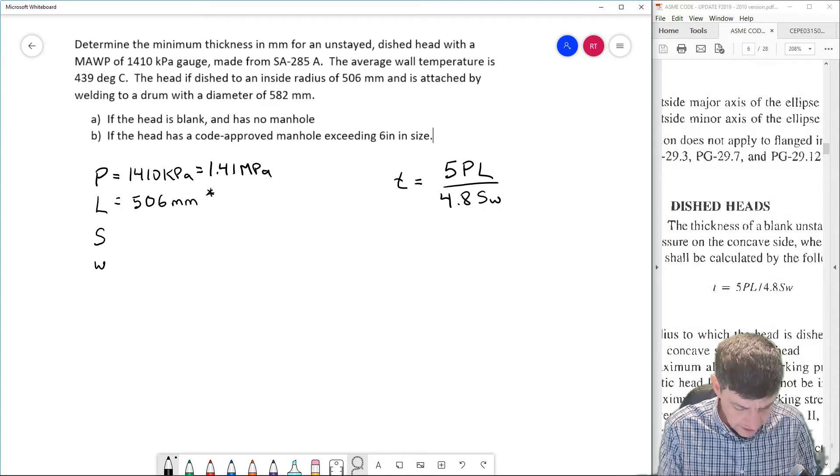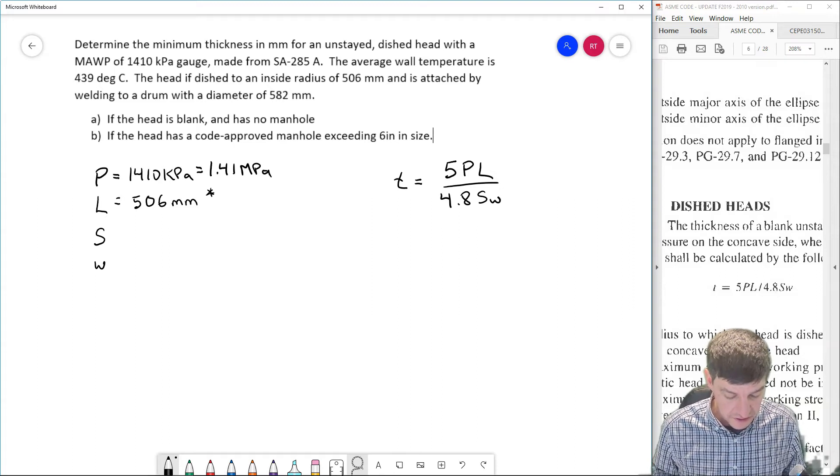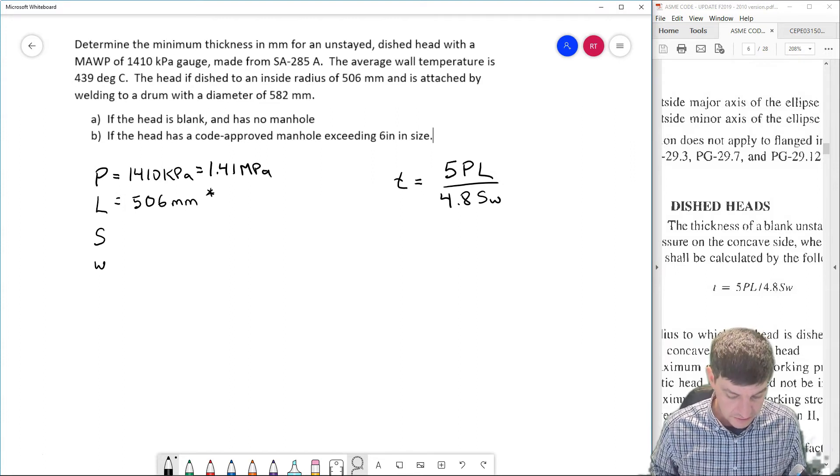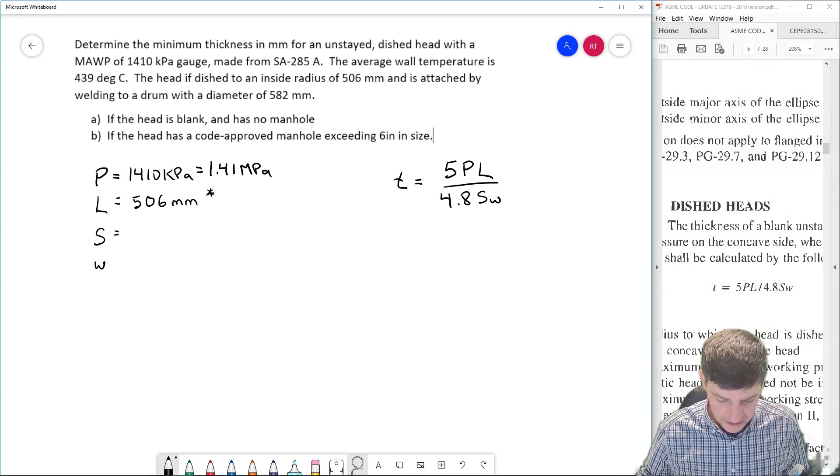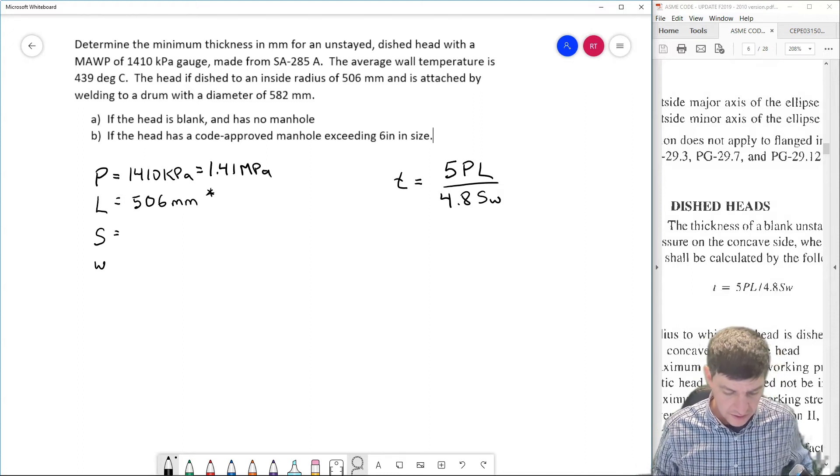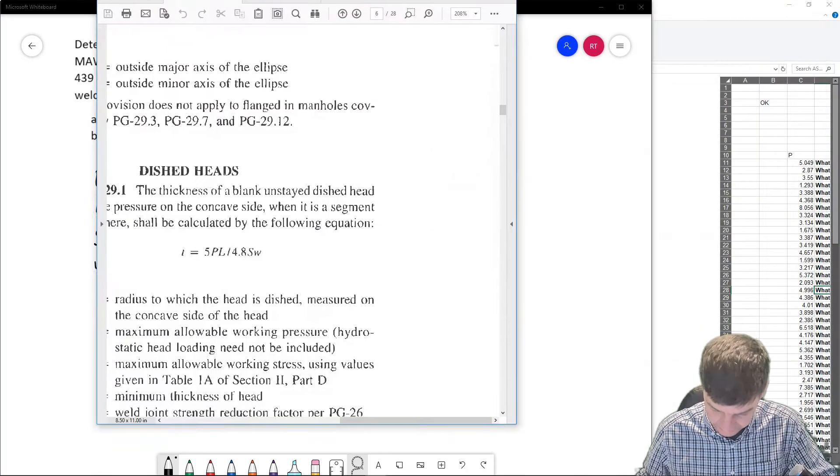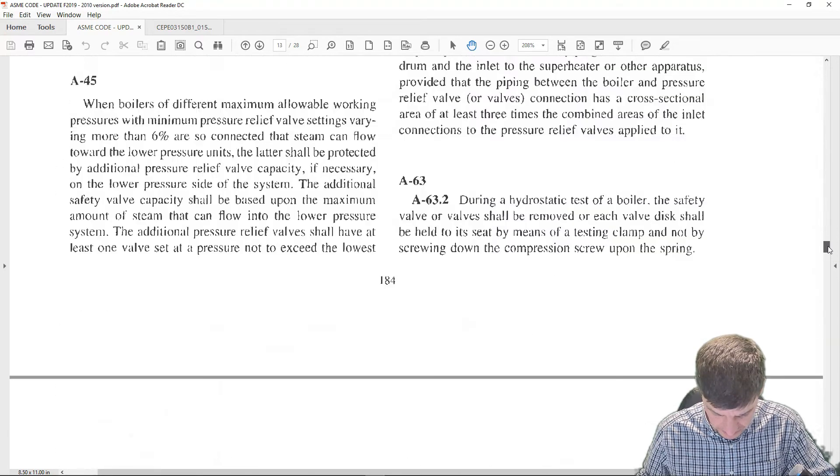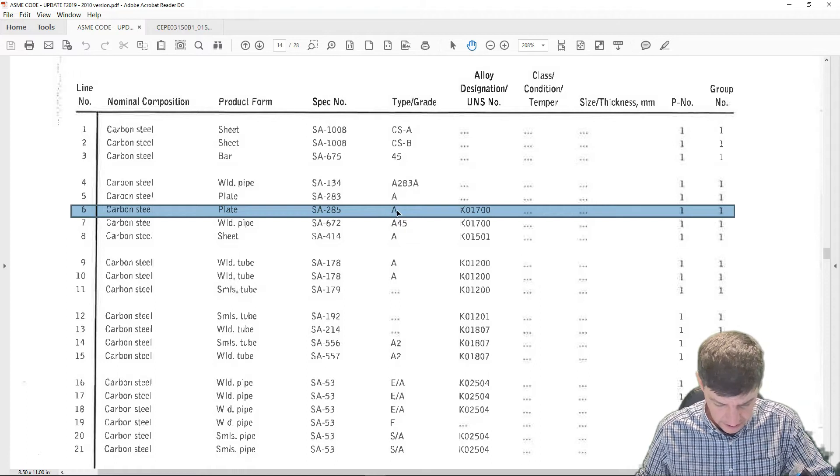Now that may change, right? We have cases where that L value may have to be increased inside of our calculations. So I'm going to leave that for now, but we're going to have to go back and revisit it in the second part of this question. And I have S, so we're going to go and look for our material. So we have SA285A at 439 degrees. All right, so I'm going to scan down to my material properties.